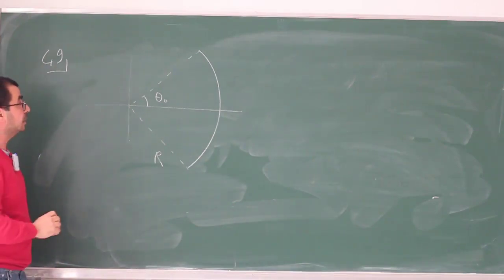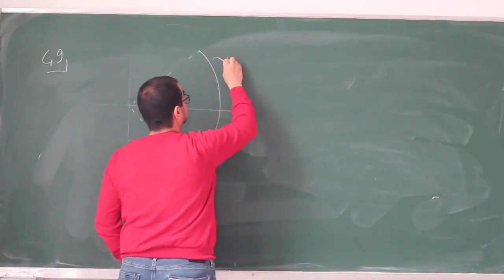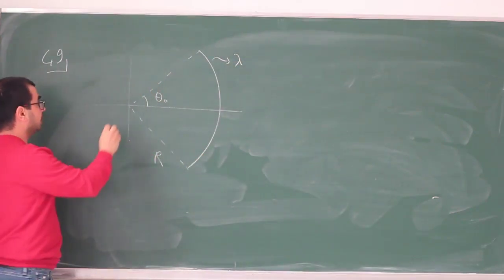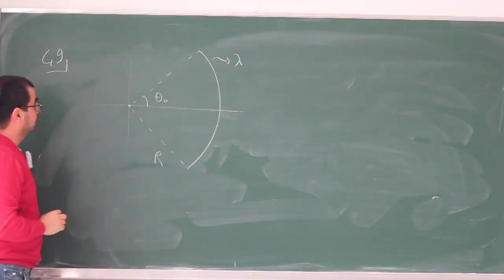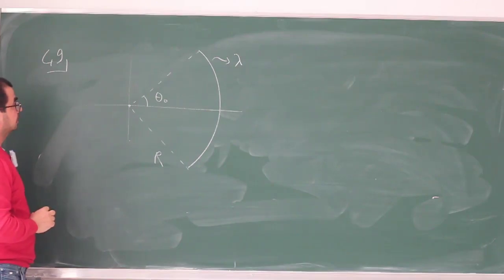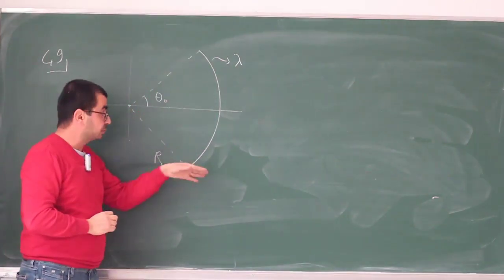We are given the linear charge density for this circular arc, and we are being asked the electric field at the point that corresponds to the center of the circular arc.